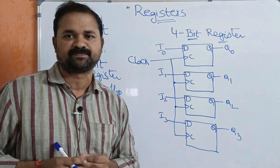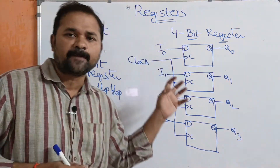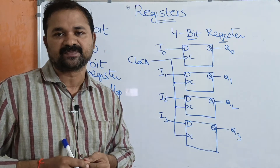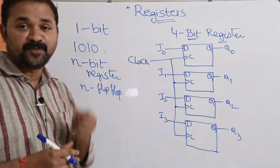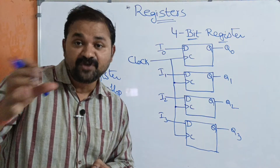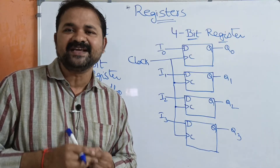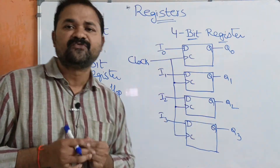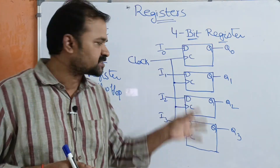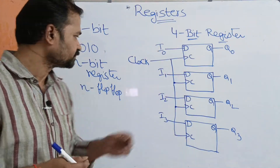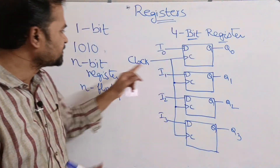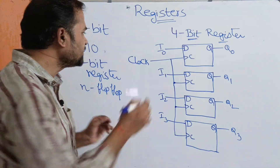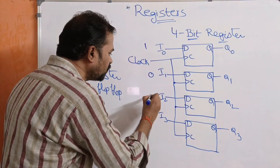Next, we must apply the clock pulse because a register is a sequential circuit. For a flip-flop, we must apply the clock pulse. If it is a latch, there is no need for a clock pulse, but here we have four flip-flops so we must apply the clock pulse on all of them. Here, C represents the clock pulse applied to all four flip-flop inputs.